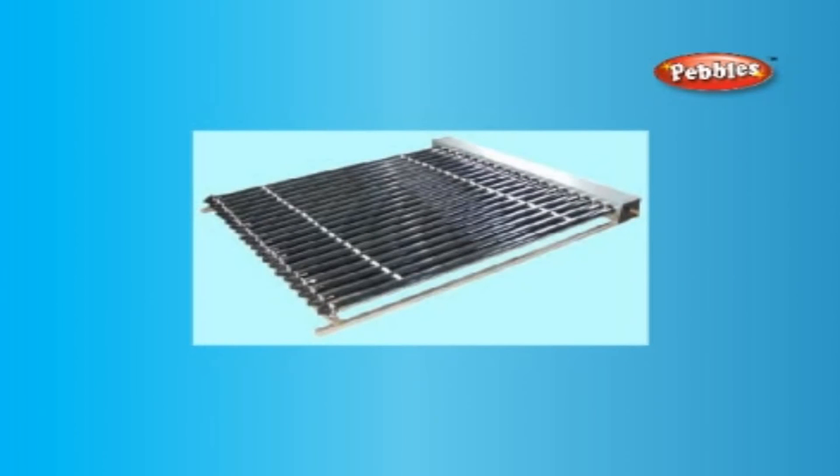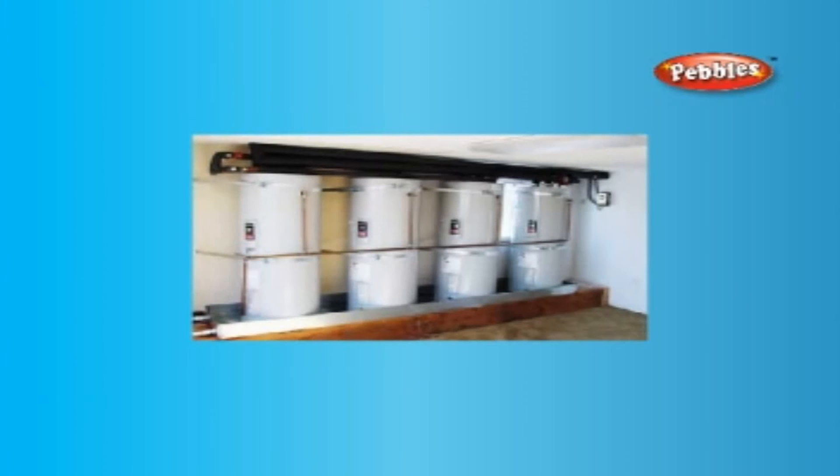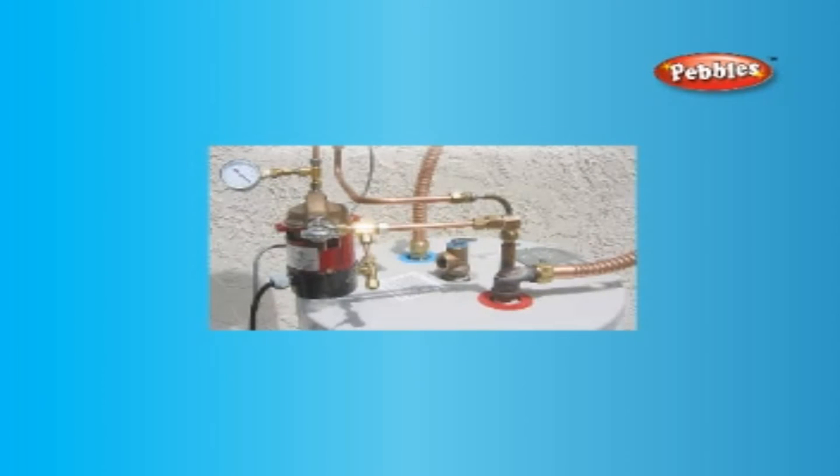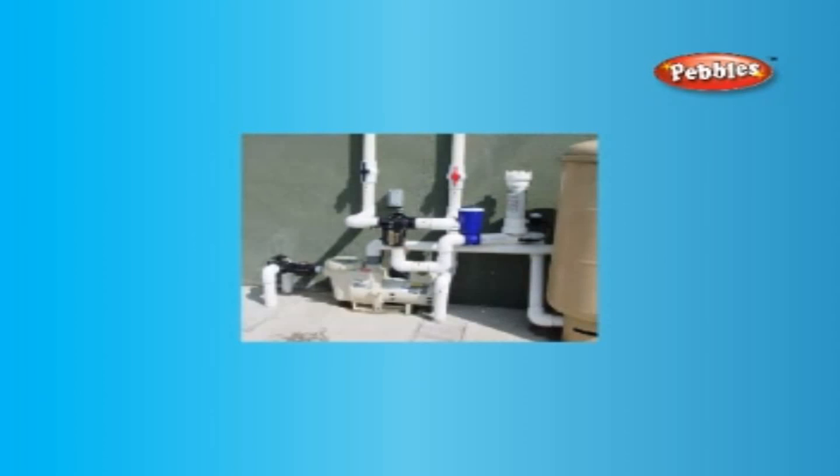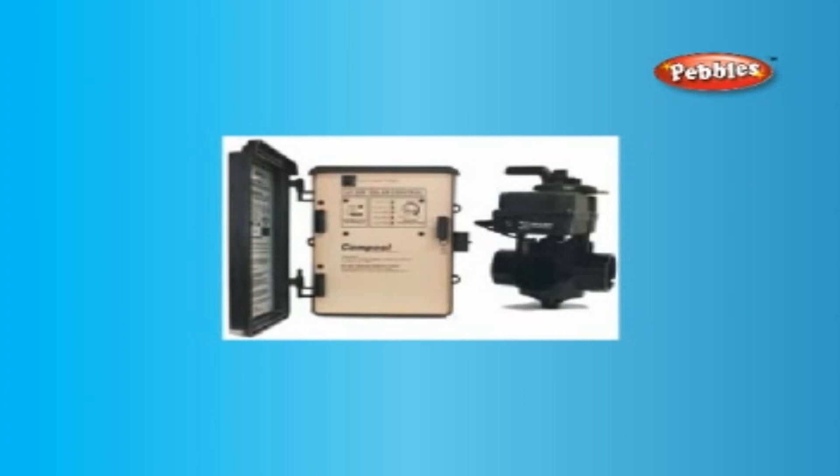Number one: collectors to capture solar energy. Number two: storage tank. Number three: circulation system to move fluid between the collectors and storage tank. Number four: backup heating system. Number five: control system to regulate the overall system operation.